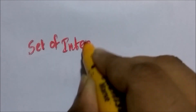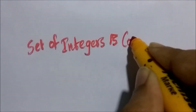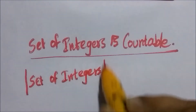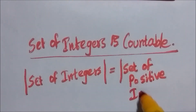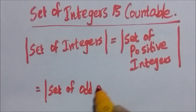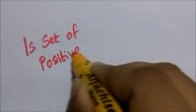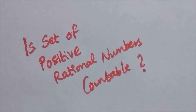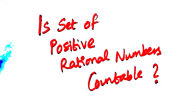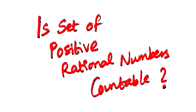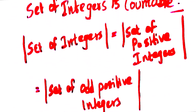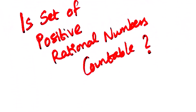So f is both one-to-one and onto, implying f is a bijection. We have proved that the set of integers is a countable set, meaning the cardinality of the set of integers is the same as the cardinality of the set of positive integers. Now we ask: is the set of positive rational numbers a countable set? That is, does the cardinality of the set of positive rational numbers equal the cardinality of the set of positive integers? Let's discuss that in our next lecture.